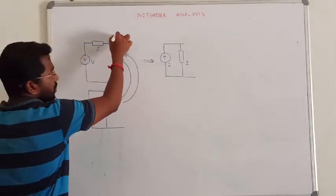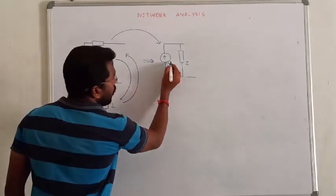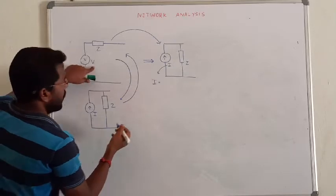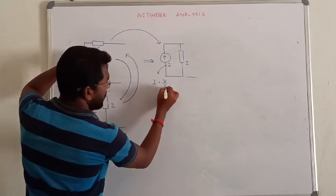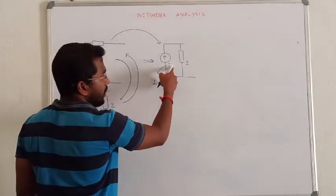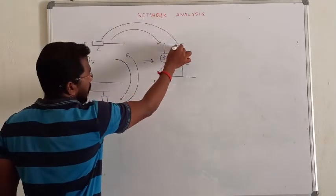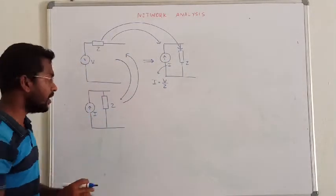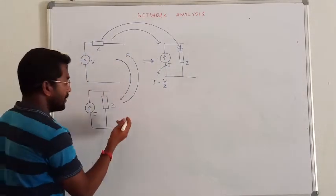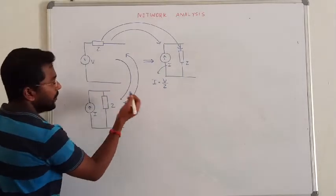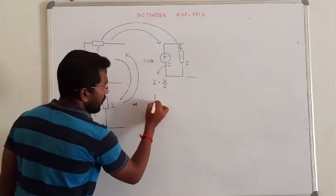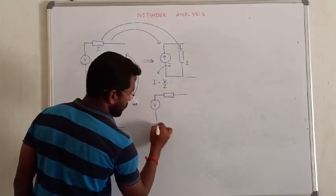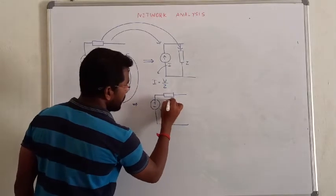To find the value of current i: i is equal to the total supply voltage divided by the impedance — that is how we find the current using Ohm's law, and that is how we are transforming a voltage source into a current source.